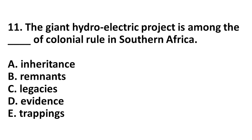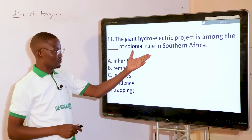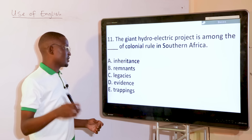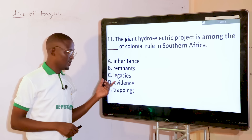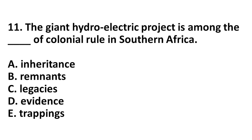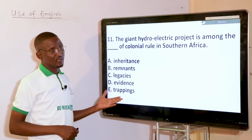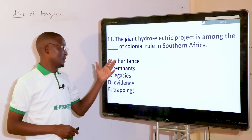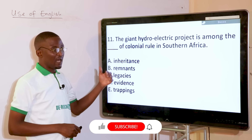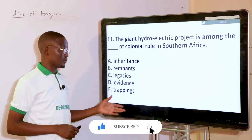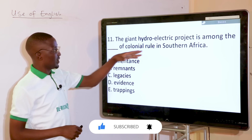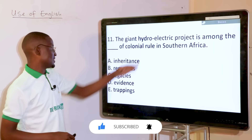The giant hydroelectric power project is among the dash of colonial rule in Southern Africa. We are talking about a positive thing being left behind, so we have legacy. Rather than saying inheritance, remnants, evidence, or trappings — though they all relate to historical remains — here we are talking about a positive item. So you have the legacies of colonial rule in Southern Africa.